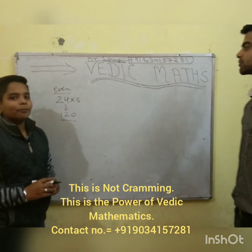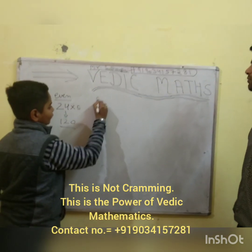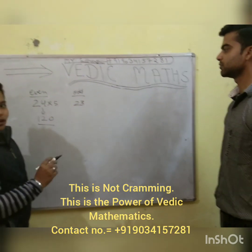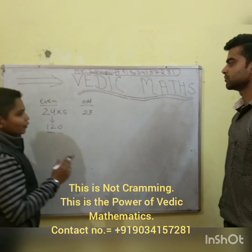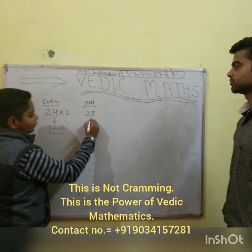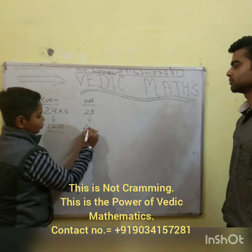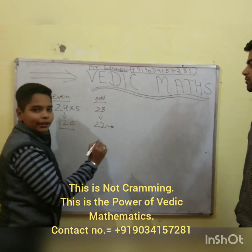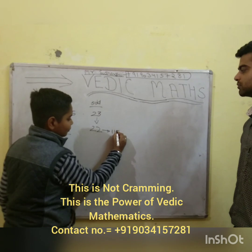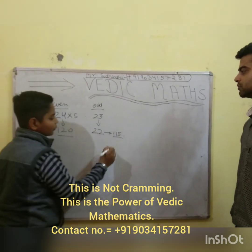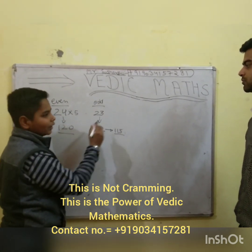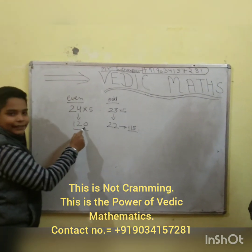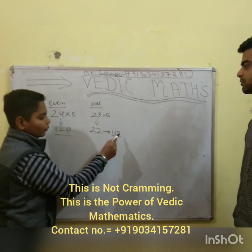Now, we will take the example of an odd number. 23 is the odd number. In this, we have to take half of its previous number. The previous number of 23 is 22. Now, we will take half. The half of 22 is 11. Now, we will put 5. The answer is 115 when we multiply 23 with 5. I repeat: in even case, we have to put 0 at the end, and in odd number case, we have to put 5 at the end.